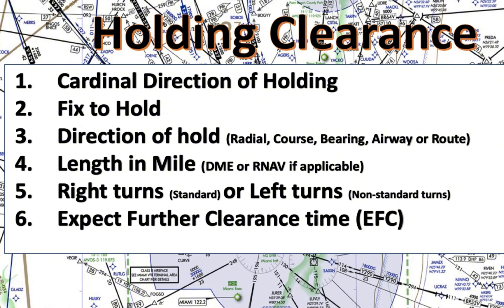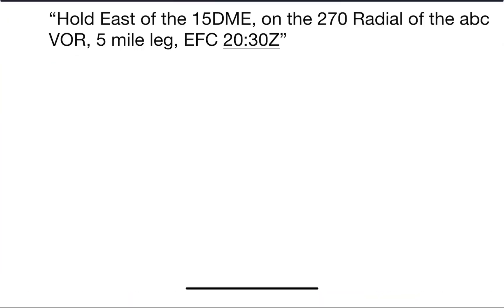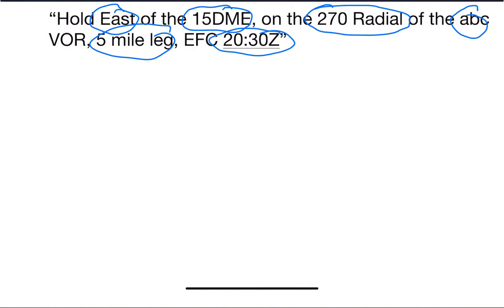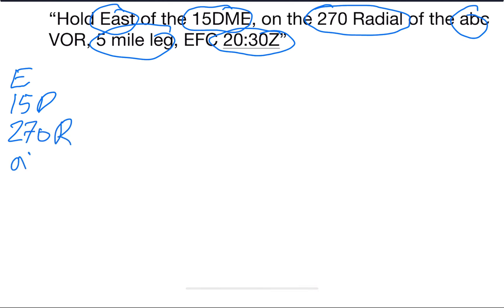Let's look at an example. Suppose ATC gives you: 'November 123, hold east on the 15 DME on the 270 radial of the ABC VOR, 5-minute legs, expect further clearance at 2030 Zulu.' This may seem overwhelming, but the trick is not to write everything word for word — just highlight the main points. I'd write: E, 15 DME (or just D for distance), 270R, ABC VOR — noting the VOR name since there could be multiple VORs in the vicinity — 5-minute legs, and EFC 2030Z.